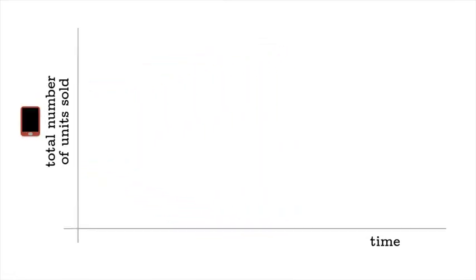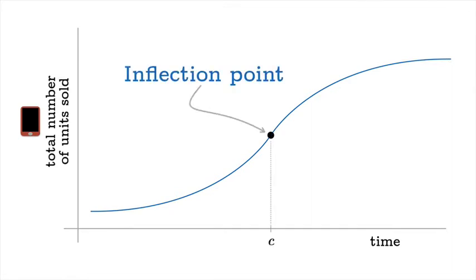You hear the term bandied about in popular culture quite a bit, certainly in business. Suppose you have some new fancy gadget, and you're going to sell these things, and you plot the total number of units sold as a function of time, you might get a graph that looks like this. And so you might notice this moment right here at time c. We could call that an inflection point.